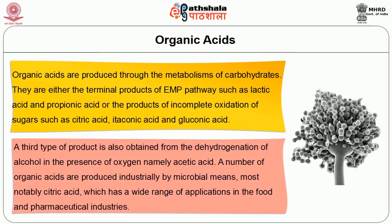A third type of organic acid product is also obtained from the dehydrogenation of alcohol in the presence of oxygen — namely acetic acid. A number of organic acids are produced industrially by microbial means, most notably citric acid, which has a wide range of applications in the food and pharmaceutical industries. Citric acid is mostly produced as a secondary metabolite by the large-scale culture of the mold Aspergillus niger.